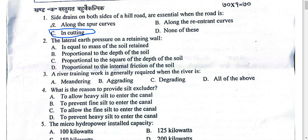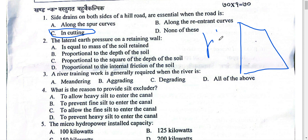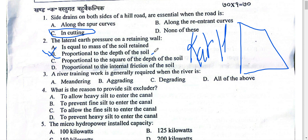Lateral earth pressure acts on the retaining wall. The pressure is directly proportional — so the outer passive pressure can be created. Kp is the coefficient of passive earth pressure, equivalent to the equilibrium. The pressure is directly proportional. You have to use lateral thrust, and to calculate it you need the depth.